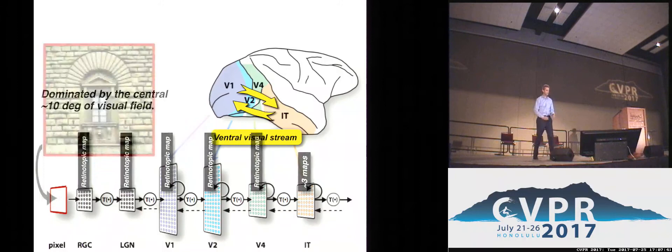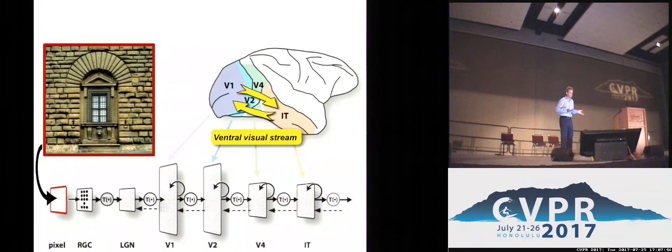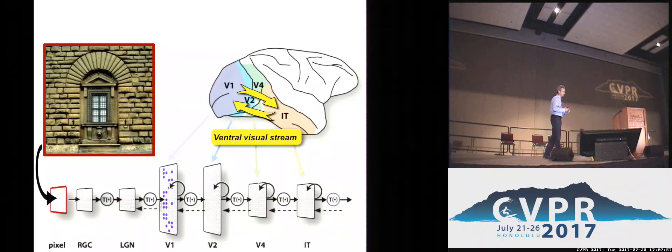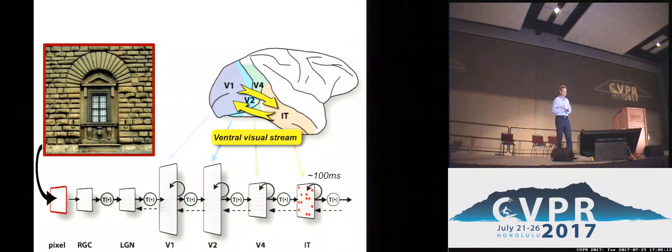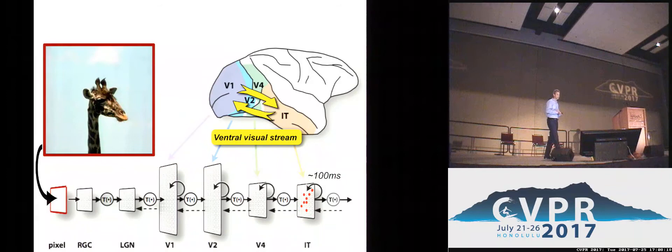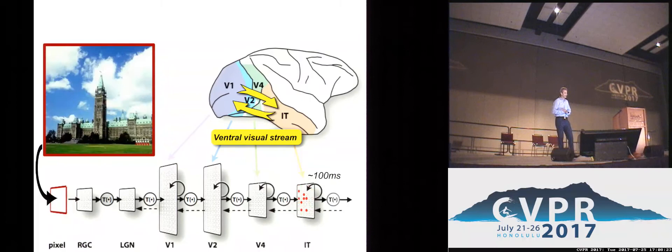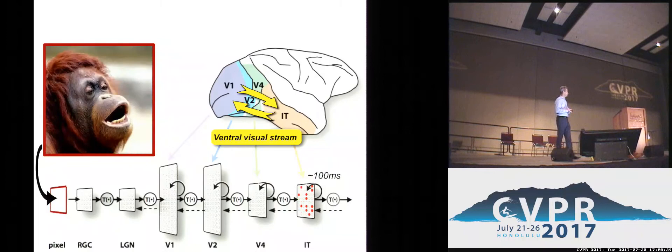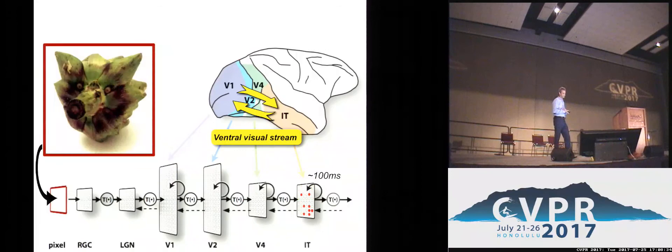This ventral stream is dominated by the central 10 degrees of visual field, especially at the upper reaches. When an image is presented, the retina makes an isomorphic copy; the retinal ganglion cells at the back of the eye fire in a pixel-wise manner with the image, producing new population patterns of activity in LGN, V1, V2, V4, and IT. In IT, about 10% of neurons fire in response to any natural image, but it's not a photographic copy anymore — the brain has transformed the data from one population space to another. This occurs with a lag of about 100 milliseconds.